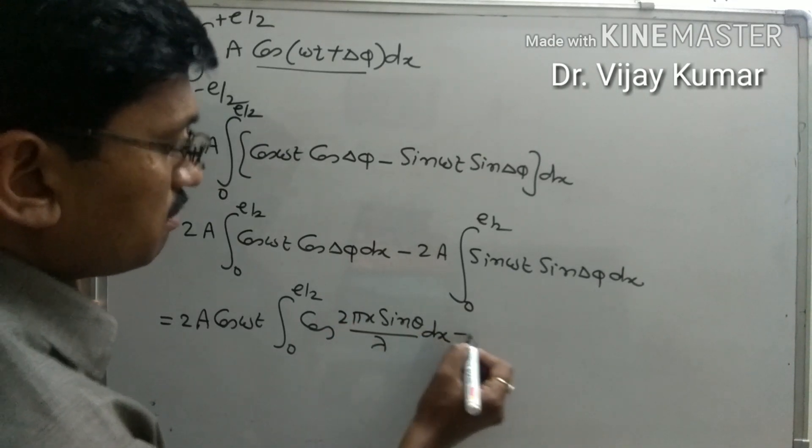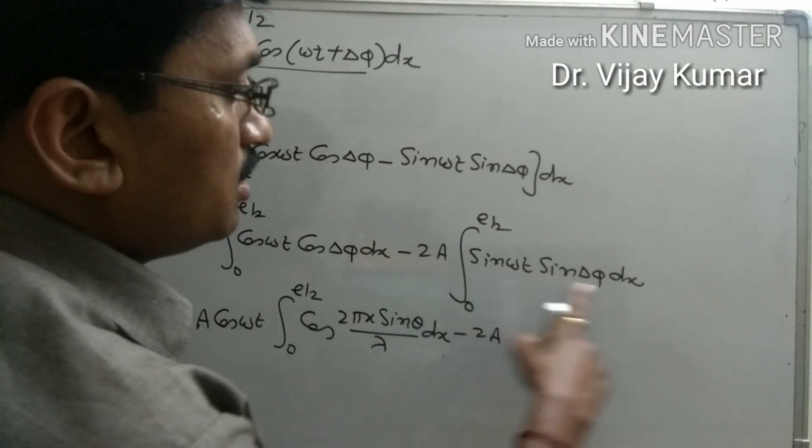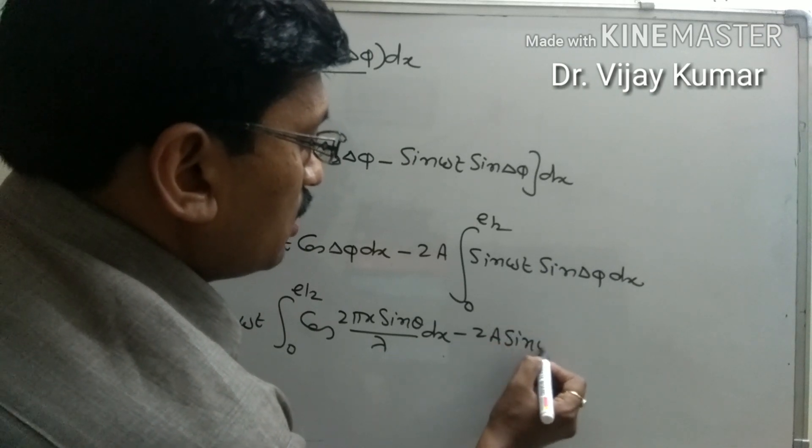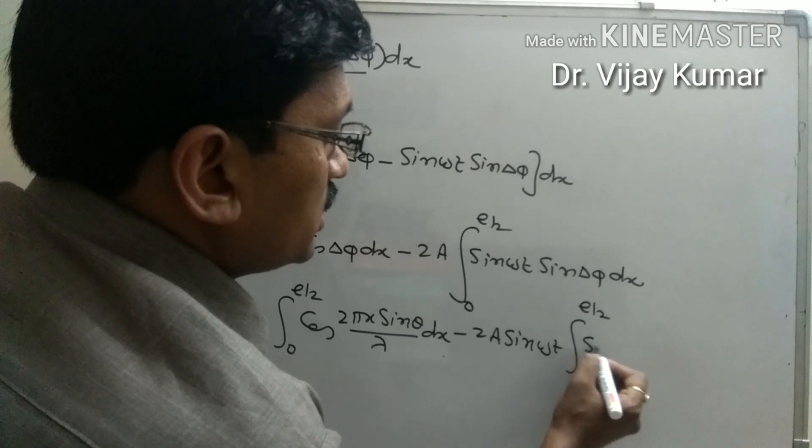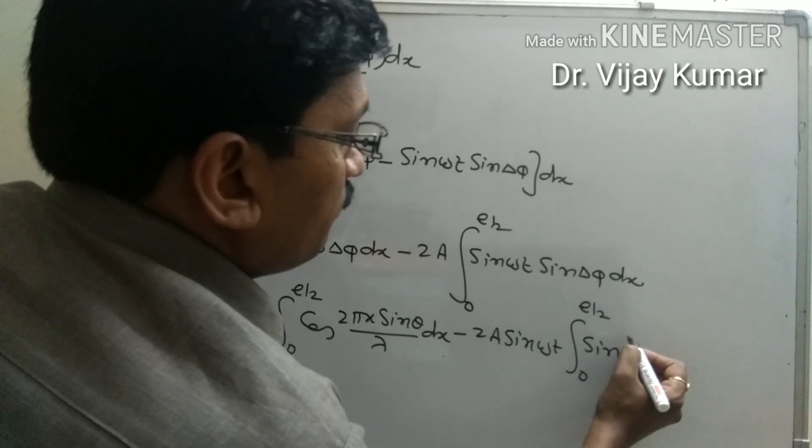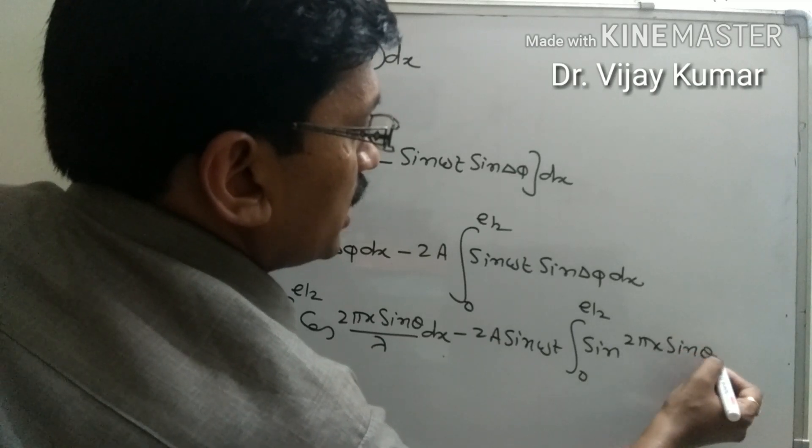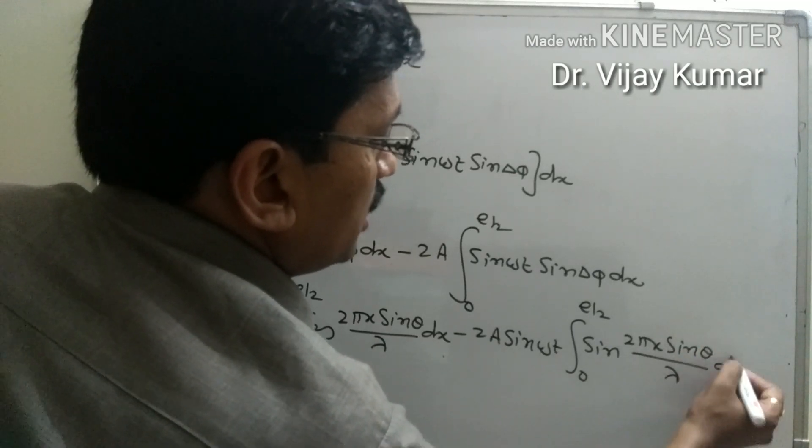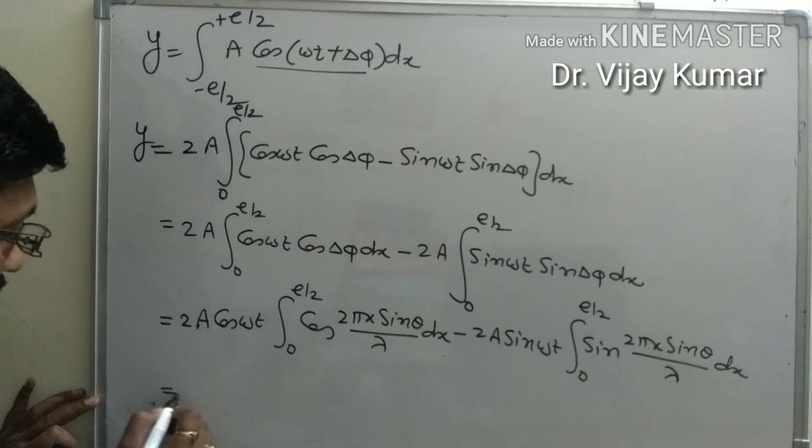Similarly, since sin(omega t) is constant with x as the variable, we have minus twice a sin(omega t) times the integration from 0 to e by 2 of sin(delta phi) dx, where delta phi is 2 pi x sin(theta) over lambda.